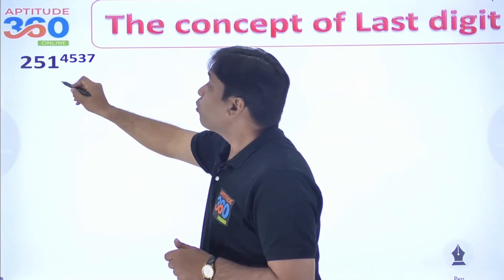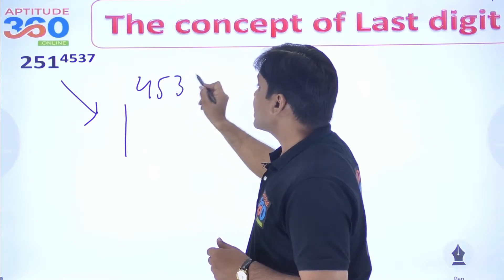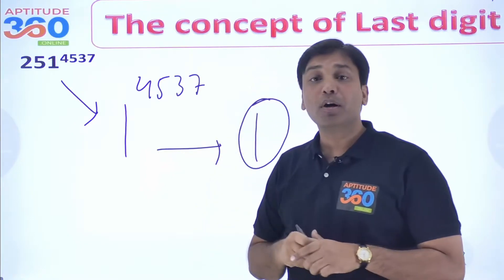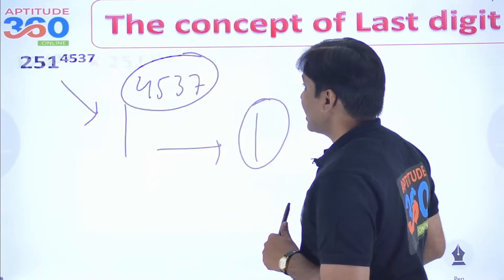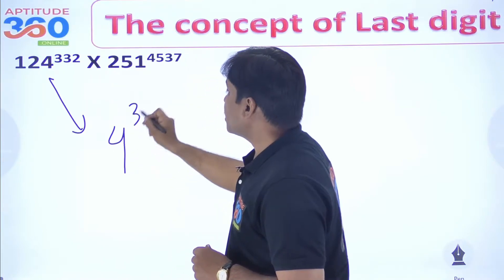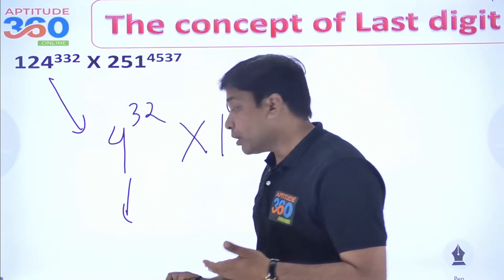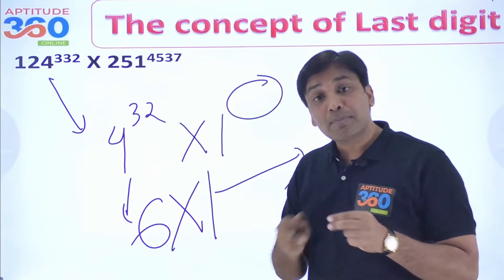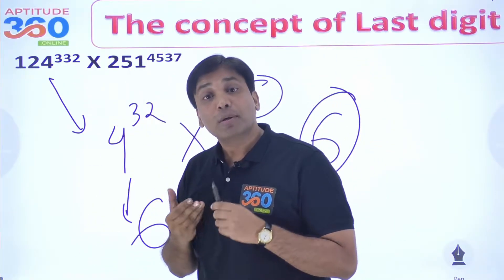Now how do we find the digit at the unit place? 251 can be written as 1 to the power 4, 5, 3, 7. Whatever you write does not make a difference because 1 to the power any number will give you 1 at the unit place. Now this is 4 to the power 32, and 4 to the power any even number gives 6 at the unit place. 1 to the power any number gives 1 at the unit place. Multiplying these two numbers gives 6 — so 6 is the answer to this very large problem.